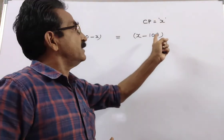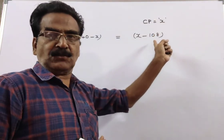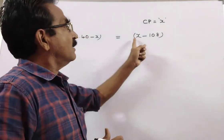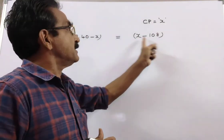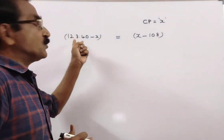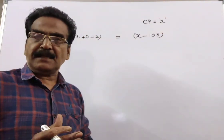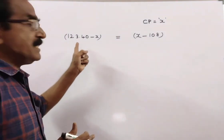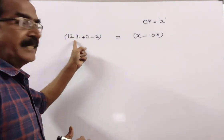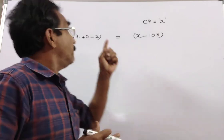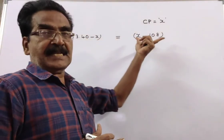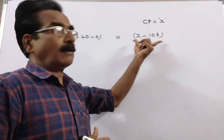If it is sold at 108, the loss is cost price minus sold price, that is X minus 108. If it is sold at 123.45, the profit is sold price minus cost price, that is 123.45 minus X. This is the profit; this is the loss.